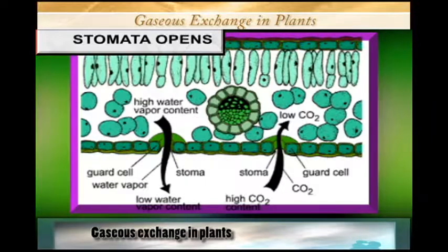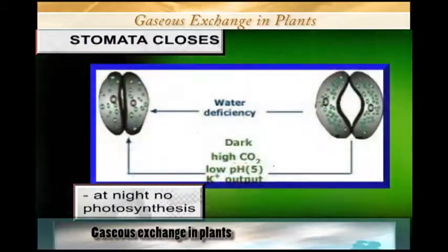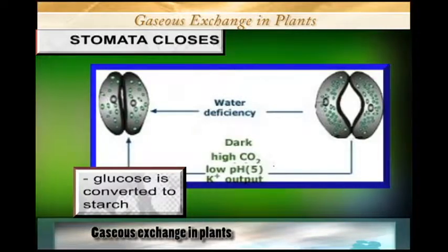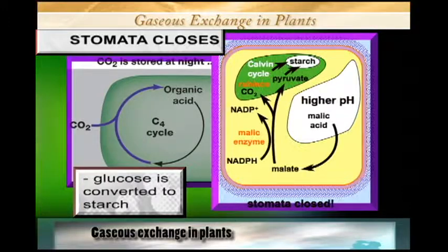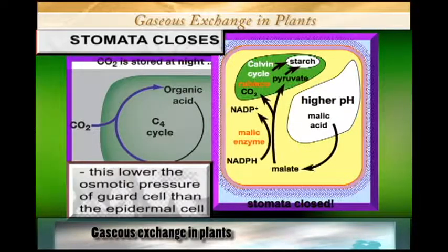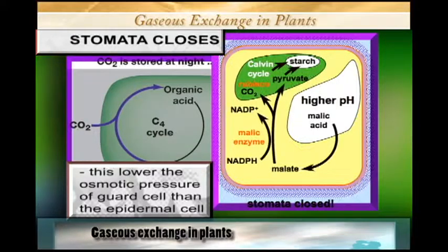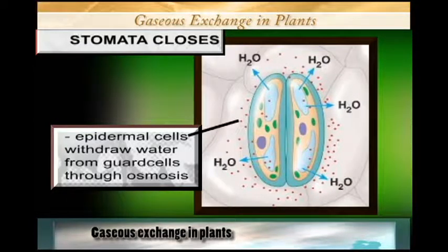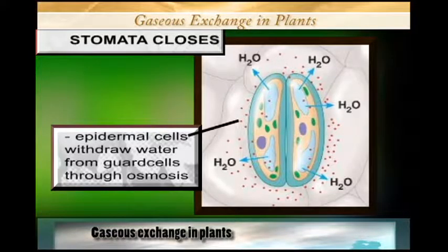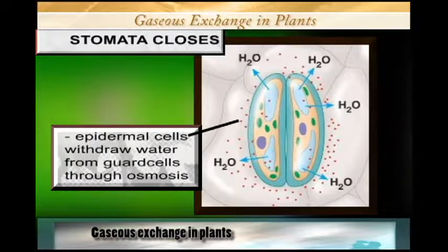Now when we look at stomata closure — how the stomata closes — usually the closing of the stomata occurs at night. At night there is no photosynthesis. This means that the glucose that was manufactured during the daytime is going to be converted to starch. When it is converted to starch, this lowers the osmotic pressure of the guard cell compared to the epidermal cells, and the epidermal cells withdraw water from the guard cells.